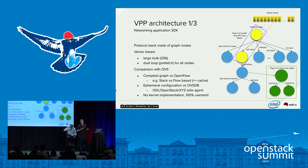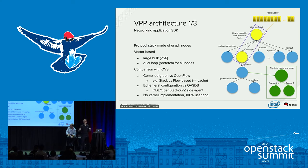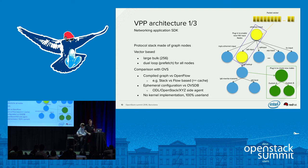Another comparison with OVS: VPP is stateless. When you start VPP, all the nodes have no configuration, so an external agent has to push the configuration. Finally, VPP has no kernel implementation counterpart — when you want to implement something in VPP, you implement it once, not twice. You don't have to implement kernel and user space; you implement a node and you're done. This accelerates development.